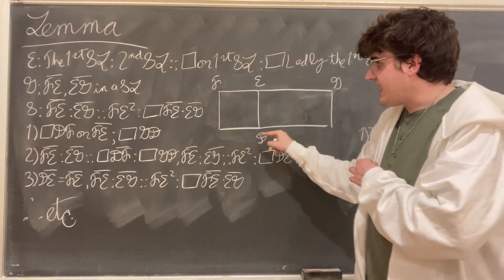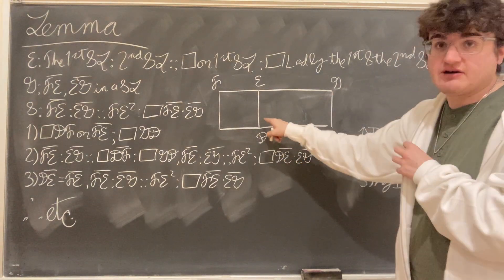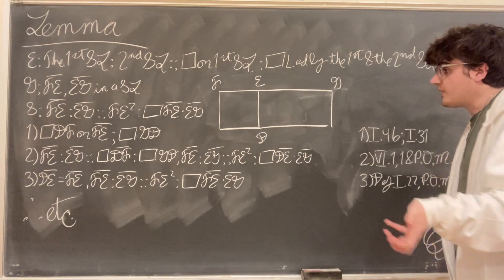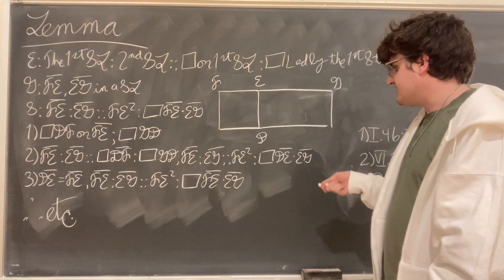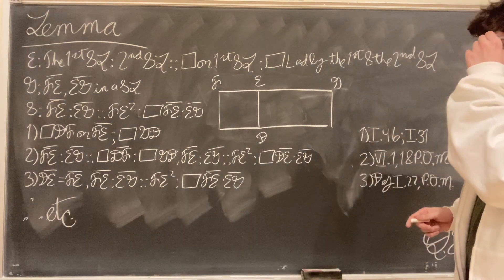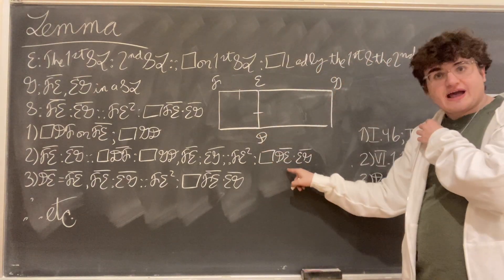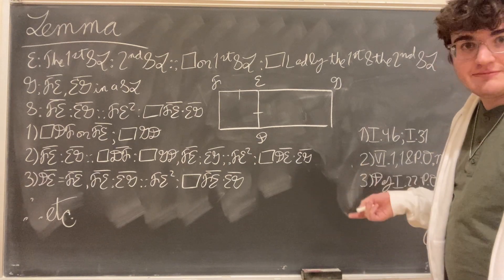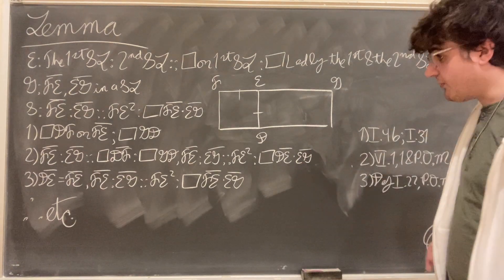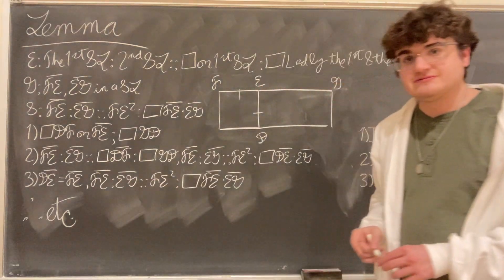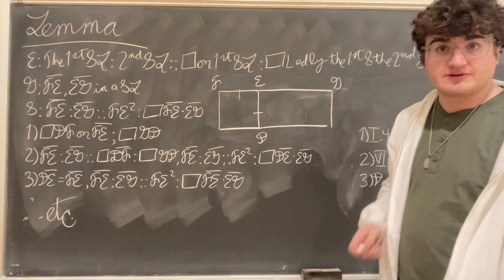Now, the square FD is FE squared, and the rectangle GD is the rectangle contained by DE and EG. So substituting into our proportion, FE is to EG as FE squared is to the rectangle contained by DE and EG. But because DF is a square, we know that FE equals DE, so the rectangle contained by DE and EG is the same as the rectangle contained by FE and EG. Substituting that in, we conclude finally that FE is to EG just as FE squared is to the rectangle contained by FE and EG. This is what we set out to prove. Q.E.D.